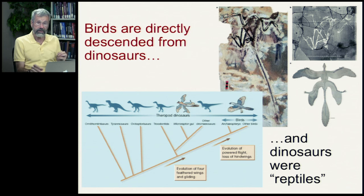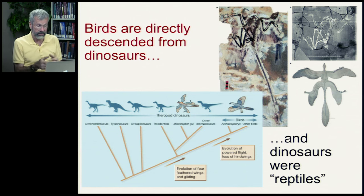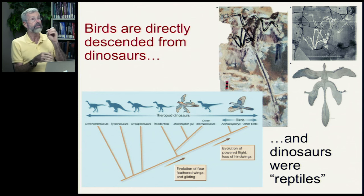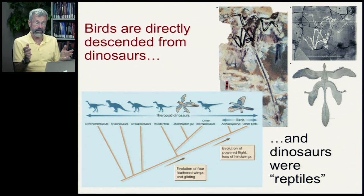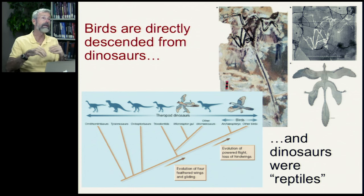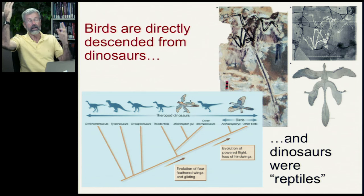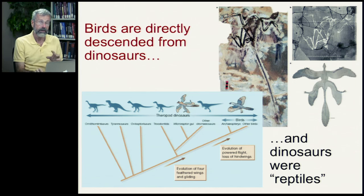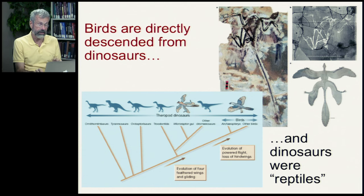Nobody doubts that in the broad term we all use, dinosaurs were definitely reptiles. But birds descend from reptiles. If we use the word reptile formally and strictly as a taxonomist, we should include birds too. But traditionally, it excluded birds from that classification.